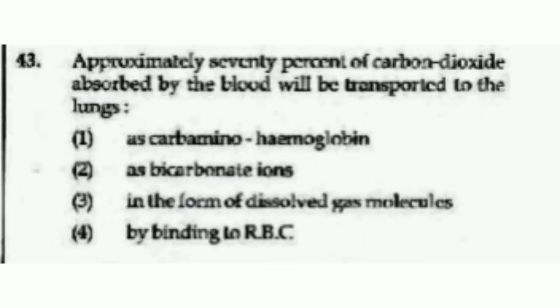Approximately 70% of carbon dioxide absorbed by the blood will be transported to the lungs — options are as carbaminohemoglobin, as bicarbonate ions, in the form of dissolved gas molecules, or by binding to RBC. The right answer is option number 2, As bicarbonate ions.